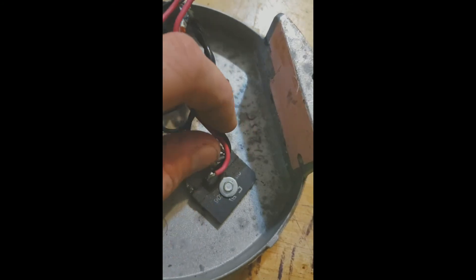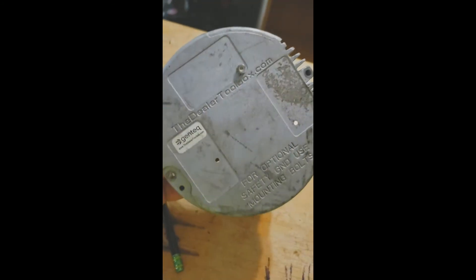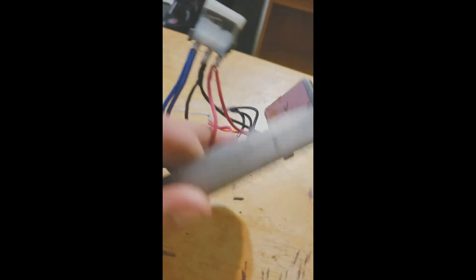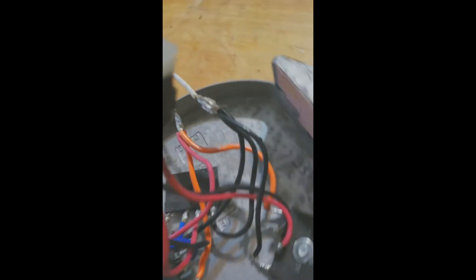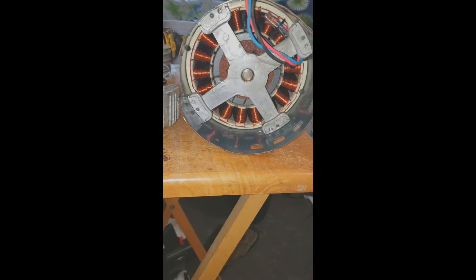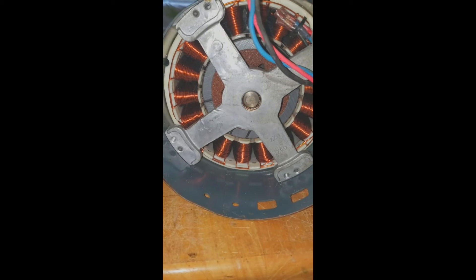Each rectifier bridge is screwed to the aluminum back plate of the motor, using it as an aluminum heat sink to dissipate the heat from the rectifier diodes. This is the inside of the X13 motor that is being used as a generator.